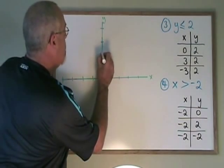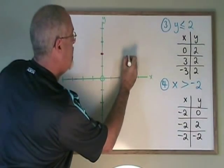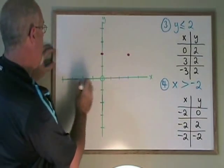0, 2 goes here. 3, 2 would be here. And negative 3, 2 is here.